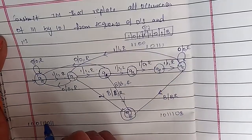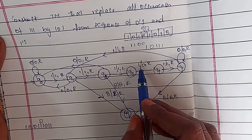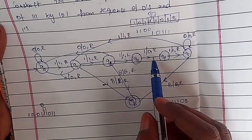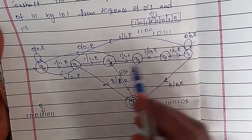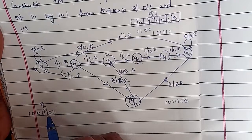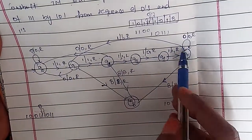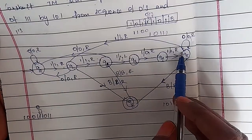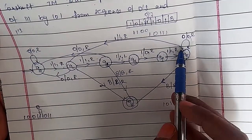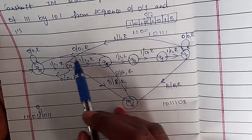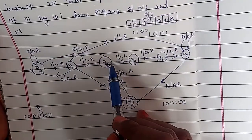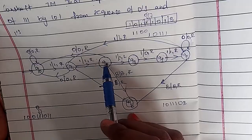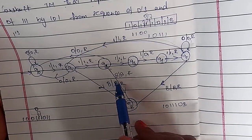You go to the left side and make the change: one to zero, right, one to zero. After that go right direction — if you see one go right and you have zero, stay on the same state Q5. After this when you have two ones, you go in this direction: first one, then second one.